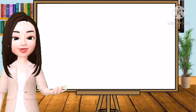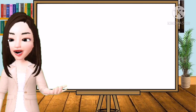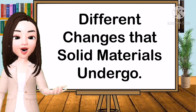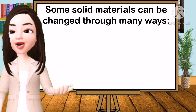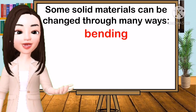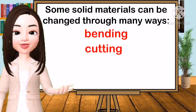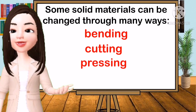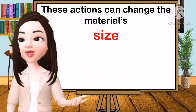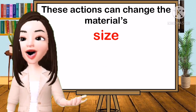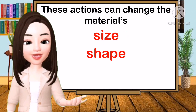In our previous lesson in science, we learned the different changes that solid materials undergo. Some solid materials can be changed through many ways — it could be by bending, cutting, pressing, or hammering. These actions can change the material's size, shape, and texture.